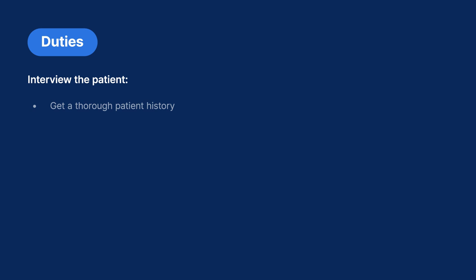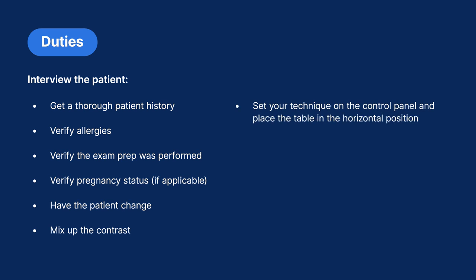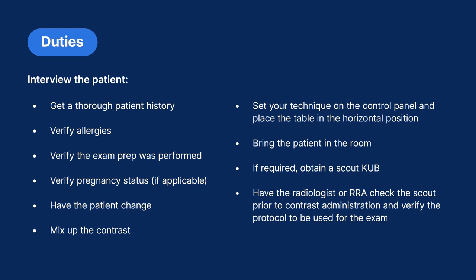Duties for a small bowel follow-through include interviewing the patient and obtaining a thorough patient history. Verify allergies and confirm the exam prep was performed. Verify pregnancy status if applicable. Have the patient change, and while changing, mix up the contrast. Set your technique on the control panel and place the table in the horizontal position. Bring the patient in the room and, if required, obtain a scout KUB before administering contrast media. Have the radiologist or RRA check the scout image prior to contrast administration and verify the protocol to be used for the exam.